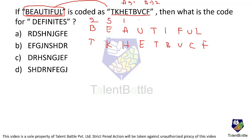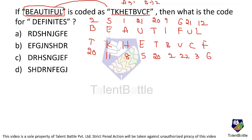Let us assign numberings for 'beautiful': B=2, E=5, A=1, U=21, T=20, I=9, F=6, U=21, L=12. And for the coded word T-K-H-E-T-B-V-C-F: T=20, K=11, H=8, E=5, T=20, B=2, V=22, C=3, F=6. If I compare in straight order — B=2 became 20 (plus 18), E=5 became 11 (plus 6), A=1 became 8 (minus 7) — the differences are inconsistent, so a simple straight-order pattern is not the logic.